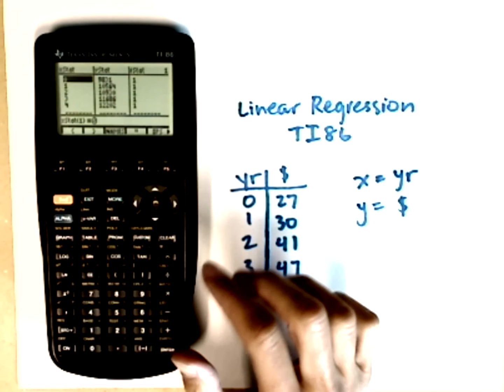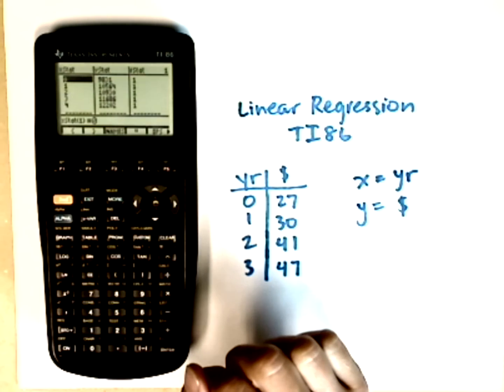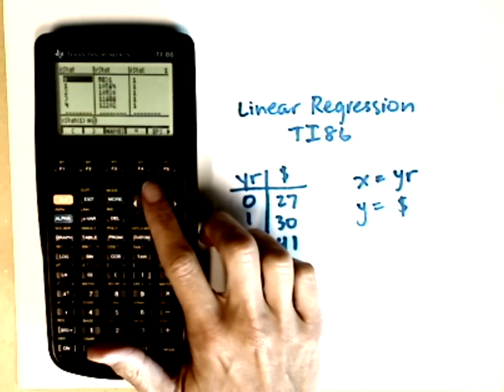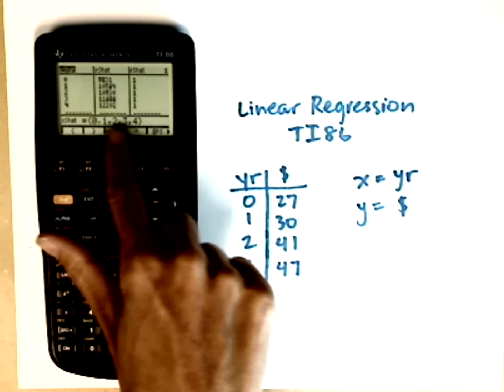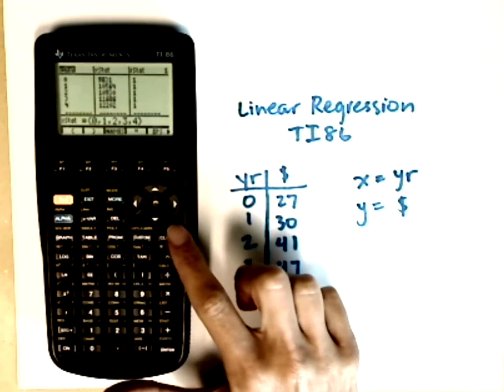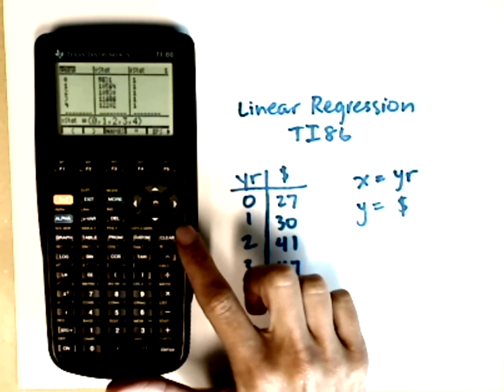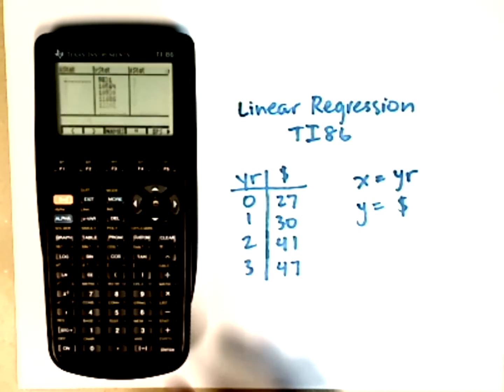I already have values in x stat and y stat, and this is where I'm going to enter my data. So I need to arrow up so that I'm highlighting the x stat name, and notice I've got all the values listed down here. I'm going to hit clear. Don't hit delete. I'm going to hit the clear button followed by enter.